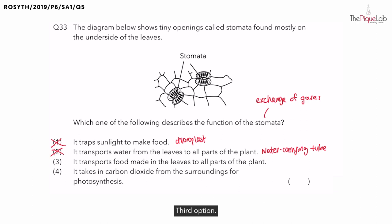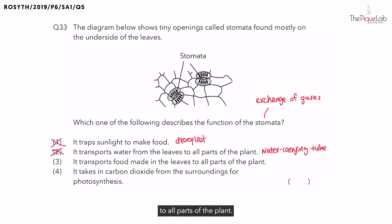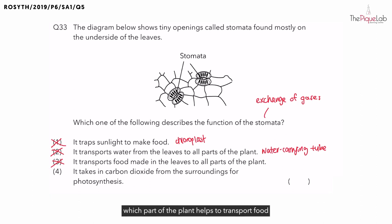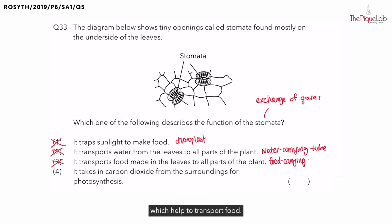Third option: stomata transports food made in the leaves to all parts of the plant. Is this the function of the stomata? No. Instead, it is the food-carrying tubes found in the stem which help to transport food made in the leaves to all parts of the plant. Therefore, option three is not true as this is the function of the food-carrying tubes.